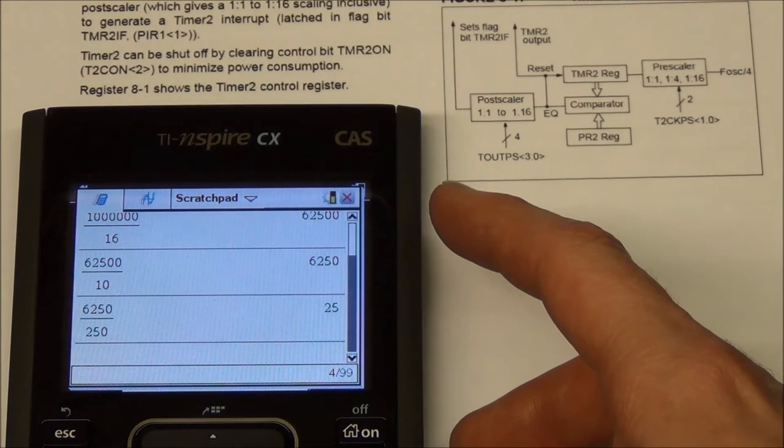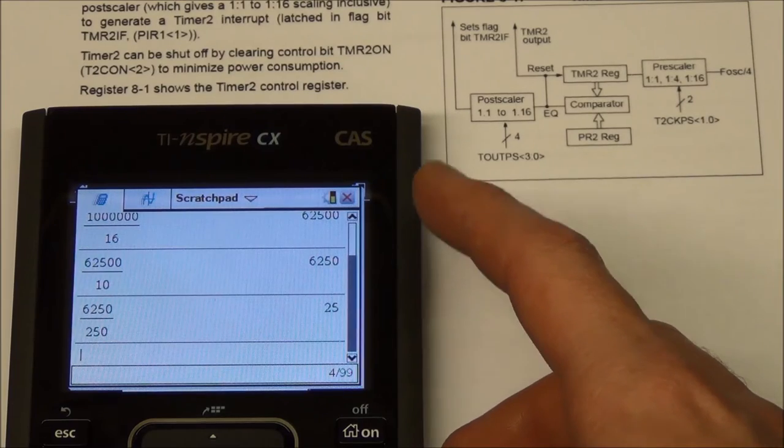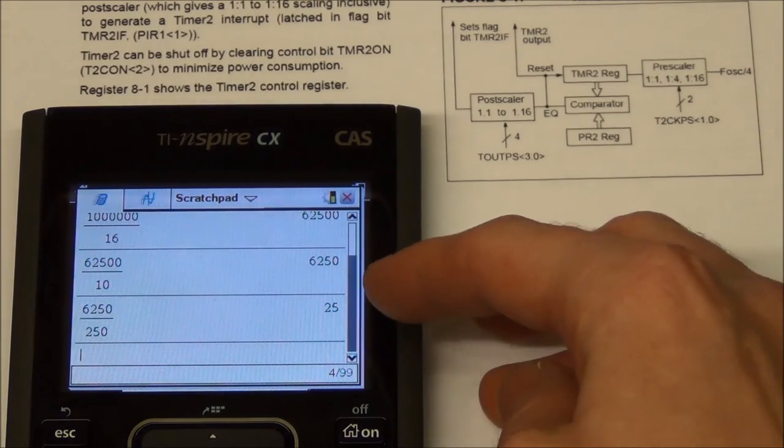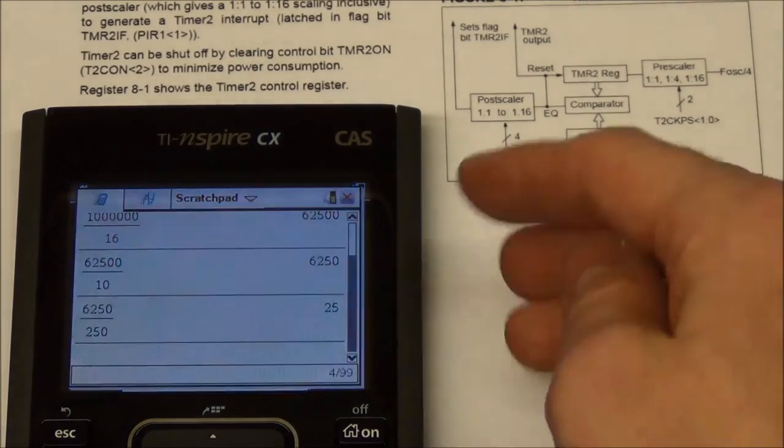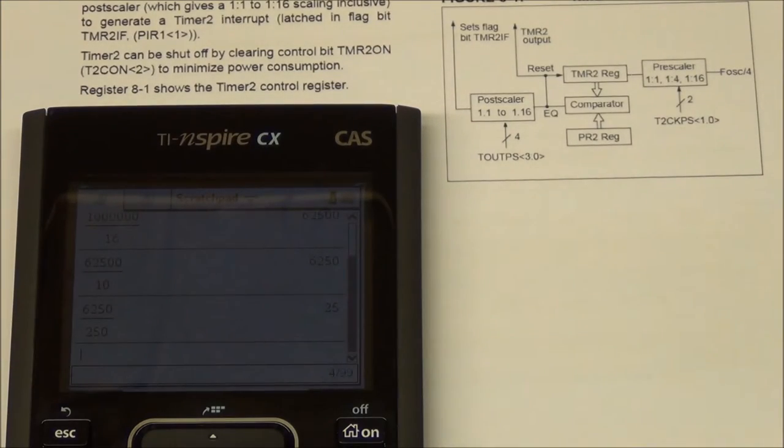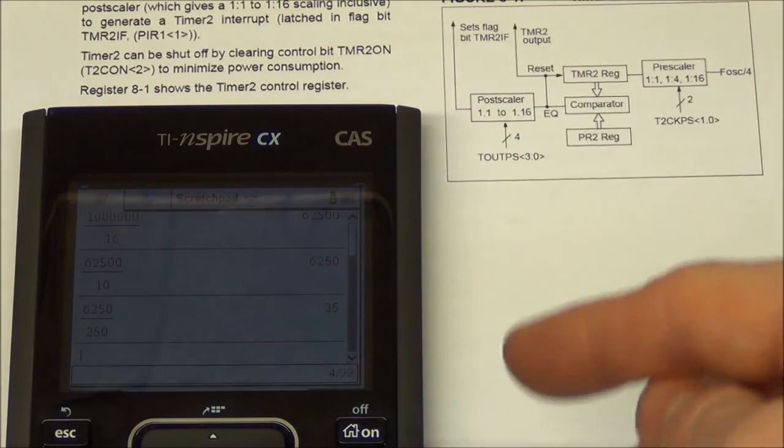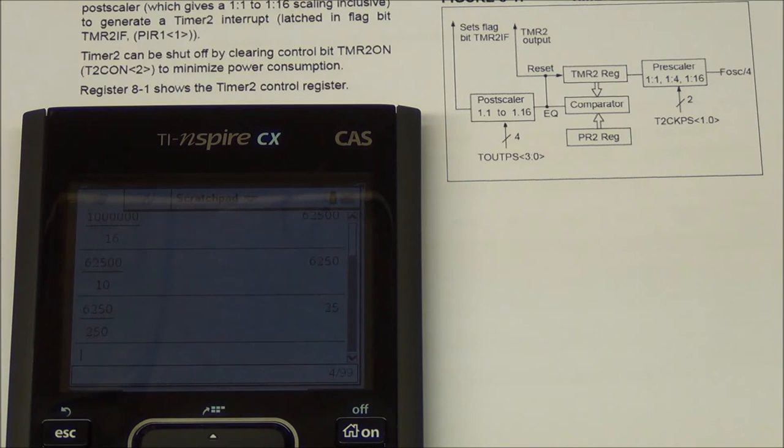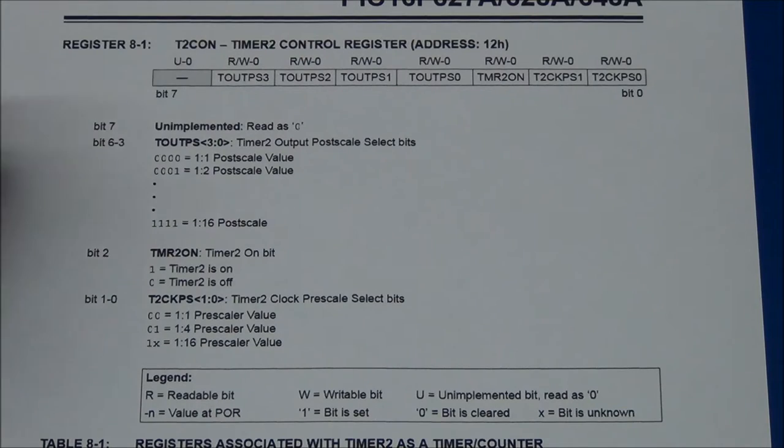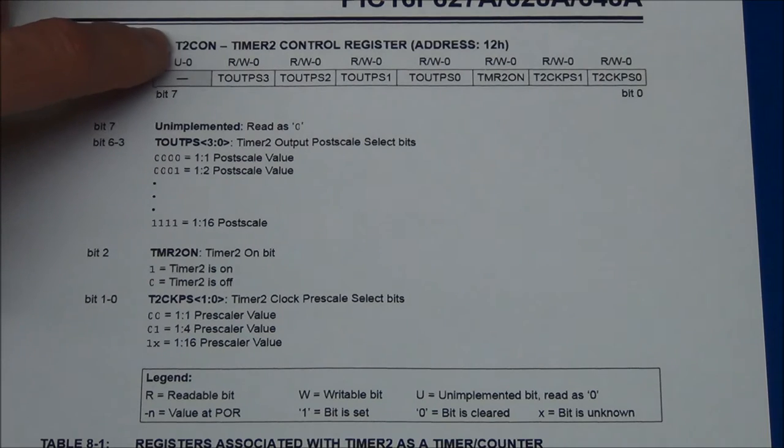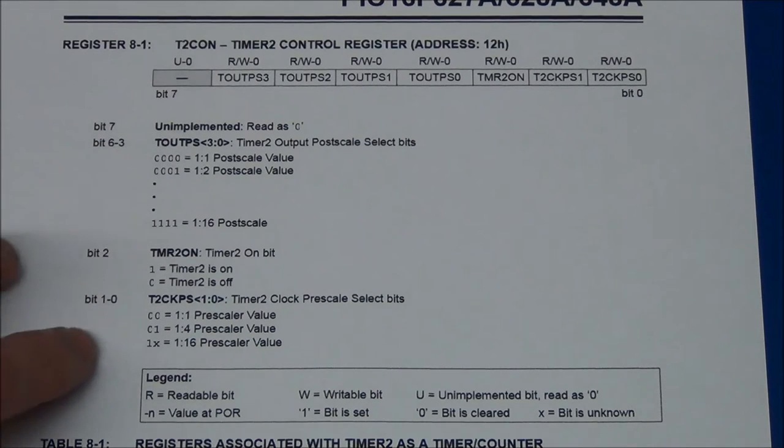And remember the data sheet said it would make an interrupt for every overflow, so we will get 25 overflows or interrupts a second, and we can just count those. And we know every time we hit 25 we need to increment the clock by one second. And this is just a quick overview of the T2Con register that's used to set all this, except for the PR2 register that's a different one. But again we have the pre-scaler, a bit to turn the timer on or off, and the post-scaler.